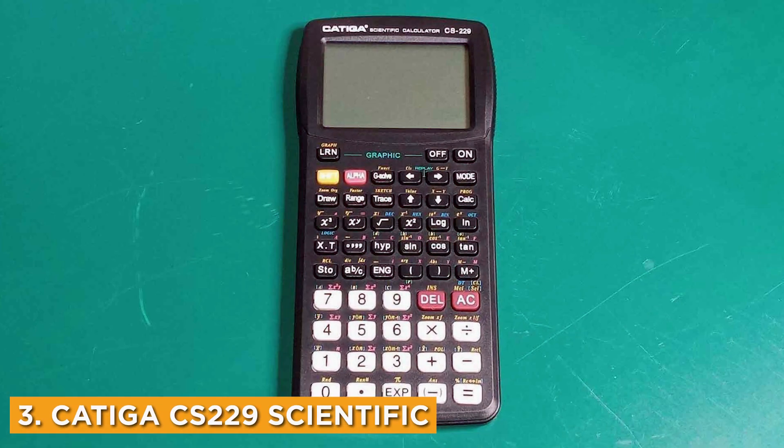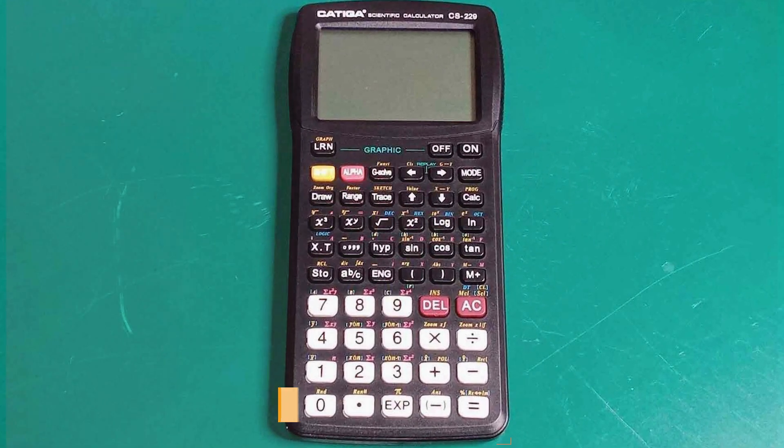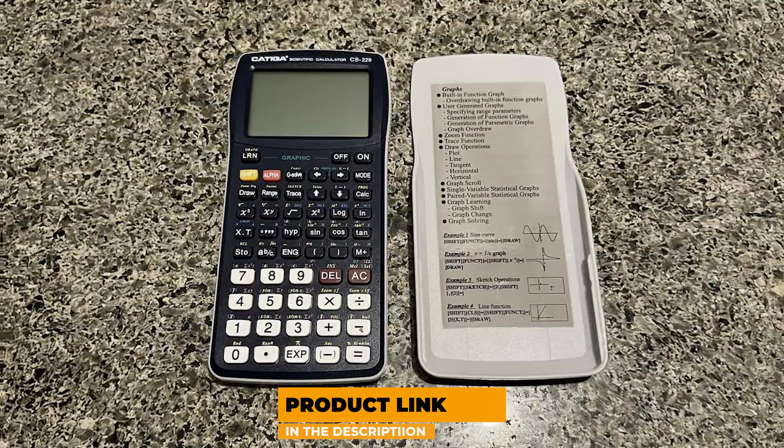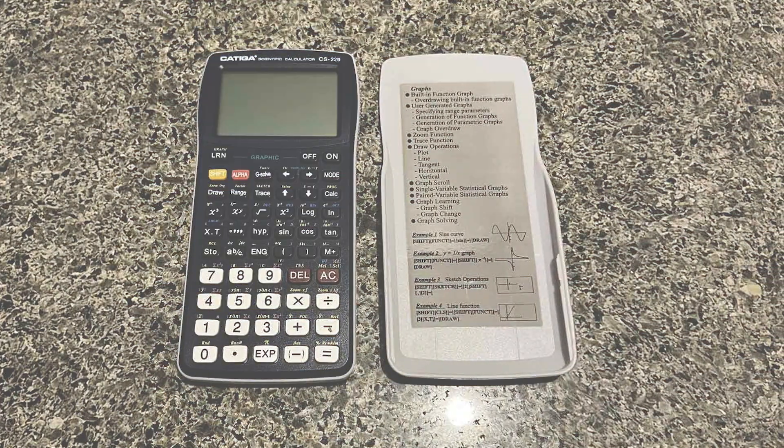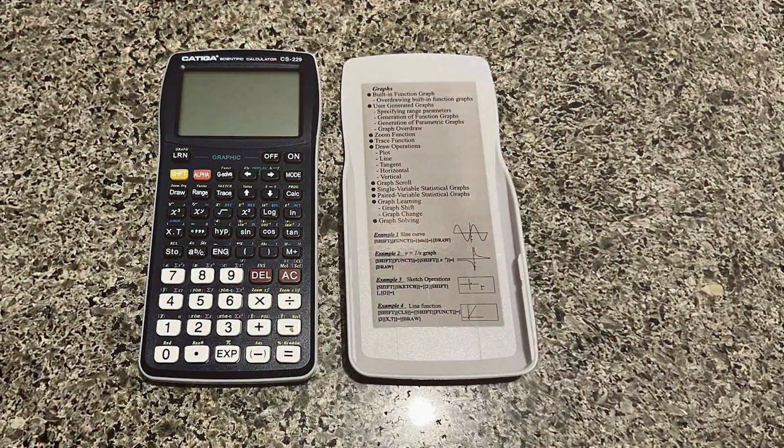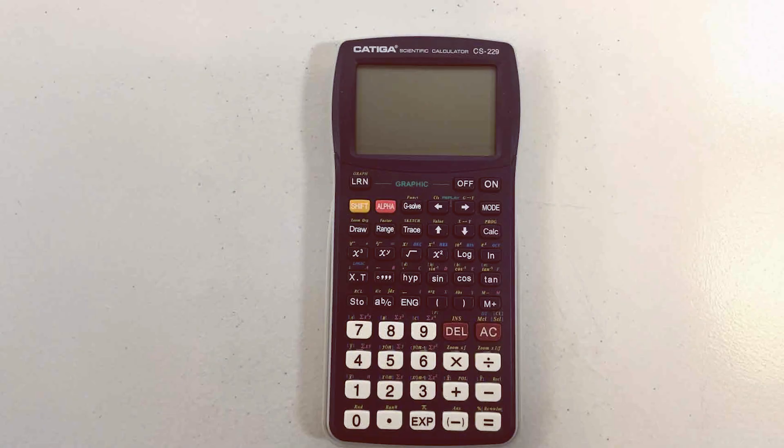Number three: CATIG ACS229 stands out for its innovative design and impressive functionality. Featuring a bold design with a bright display, this calculator not only looks good but also enhances usability with its intuitive layout. The buttons are responsive, and the screen offers a clear view of all calculations, which is essential when working on complex problems.